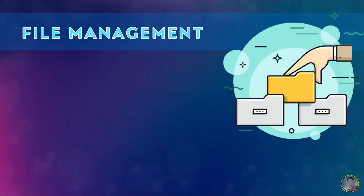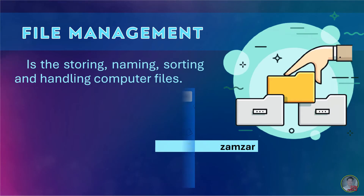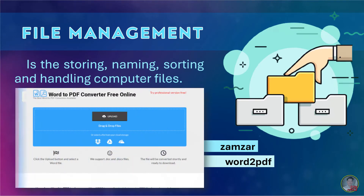Next is file management. This online platform is best for storing, naming, sorting, and handling computer files. Examples are: Zamzar, a web application to convert files. Next is Word2PDF, which converts Word files to portable document format with this online tool.